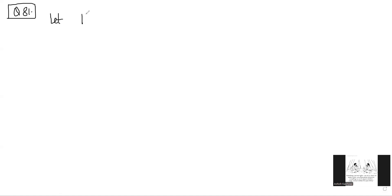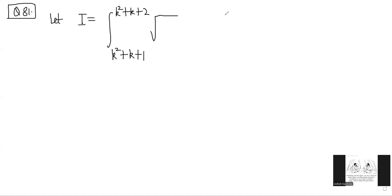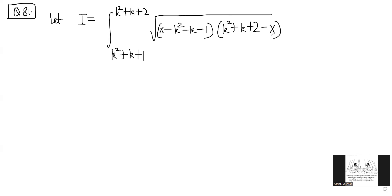So the question goes like this: let i be equal to the integral from k² + k + 1 to k² + k + 2 of the square root of (x − k² − k − 1)(k² + k + 2 − x) dx, where k is any constant.